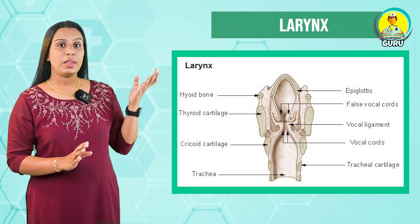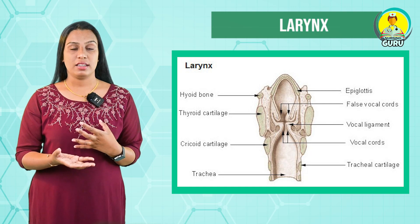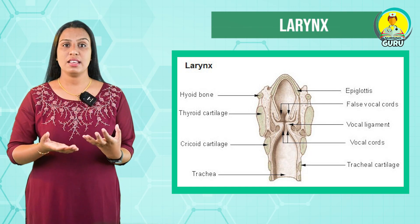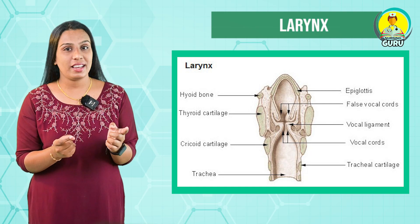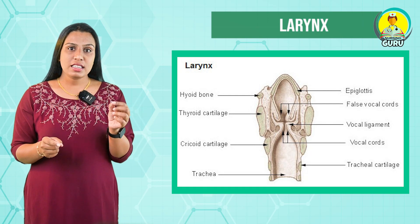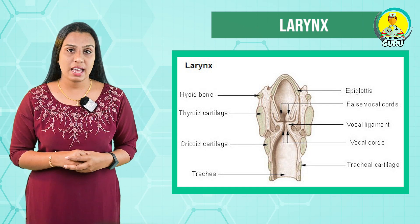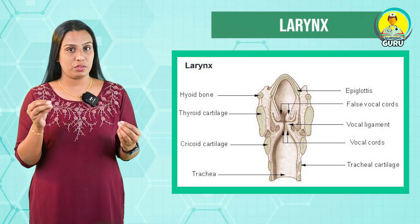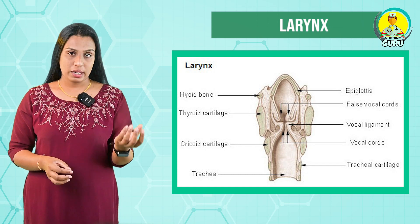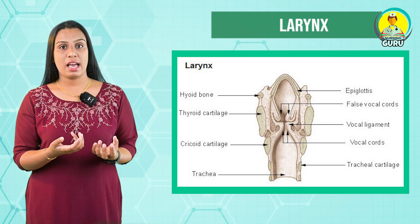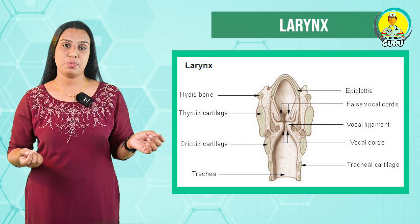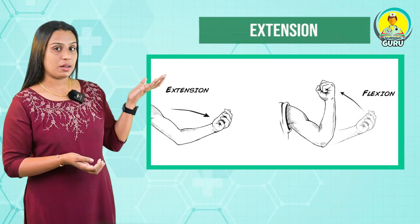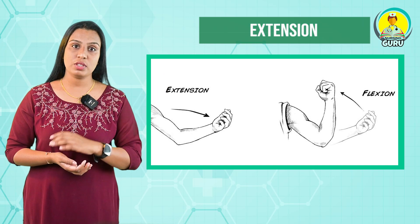I will explain how we can write an answer in a perfect way. The first question is 'larynx.' The larynx is also known as the voice box and it is located in the anterior neck. It is a component of the respiratory tract and has several important functions including phonation, cough reflex, and the protection of the lower respiratory tract.